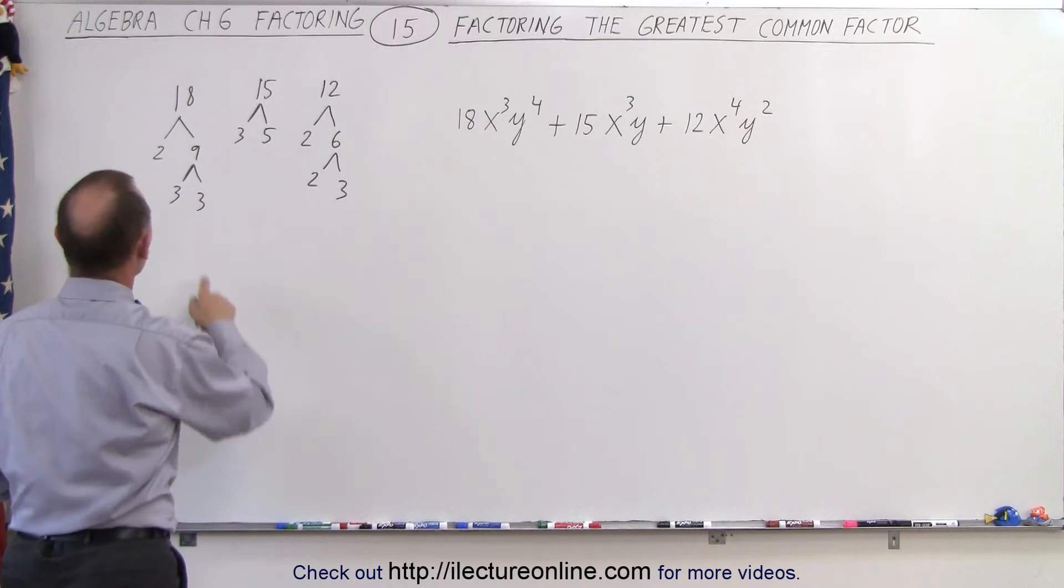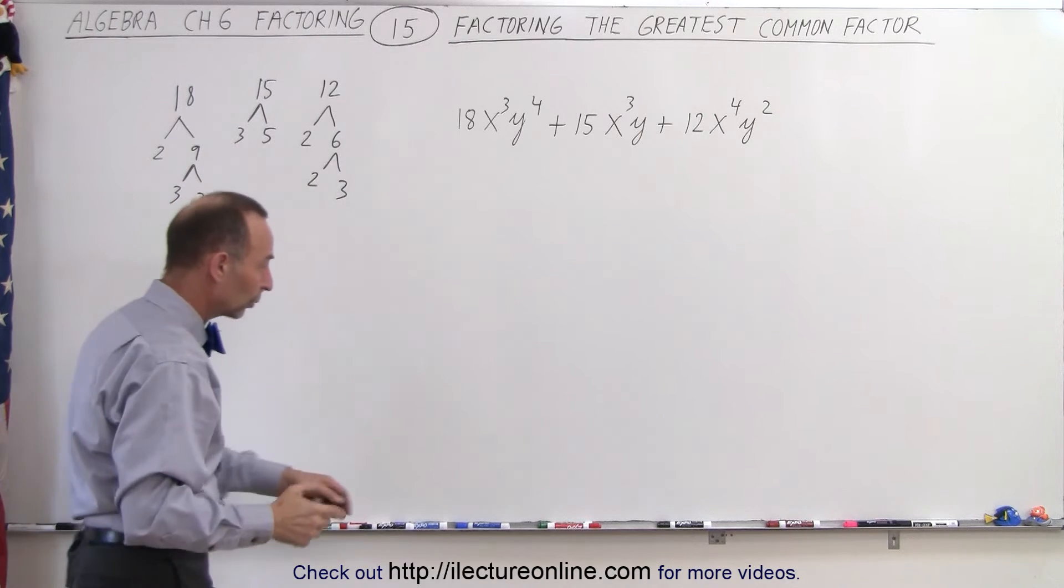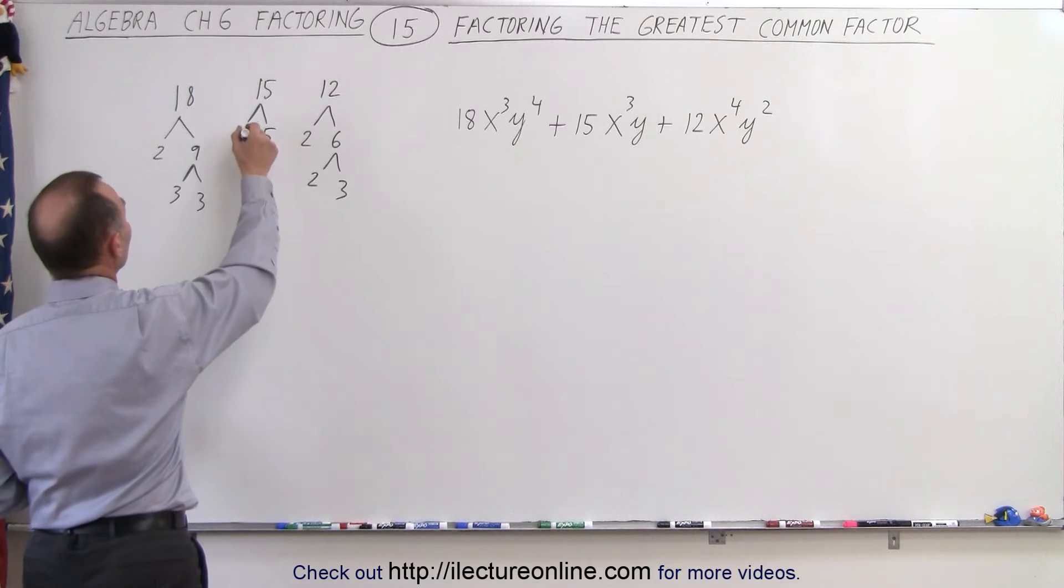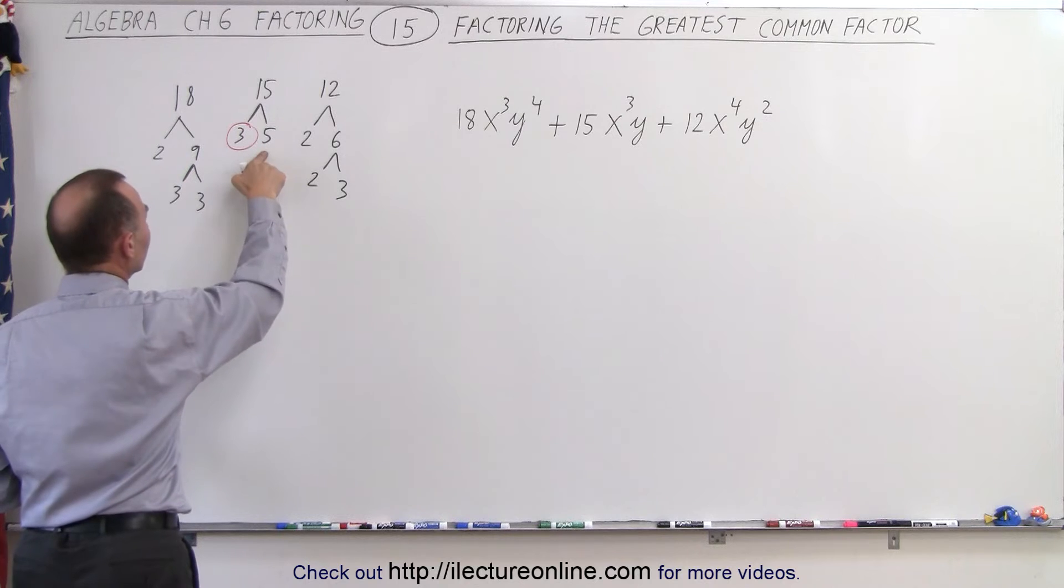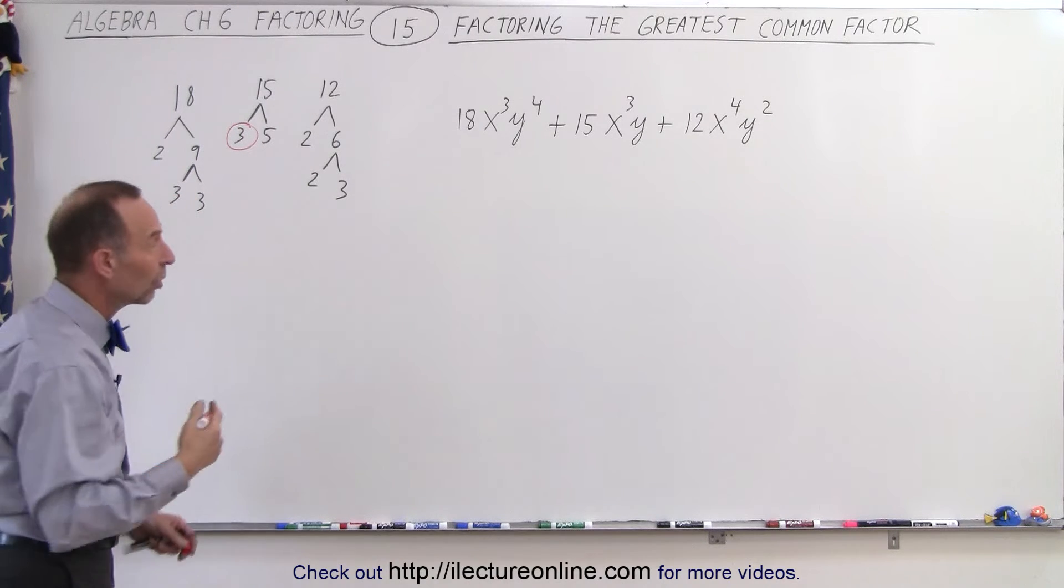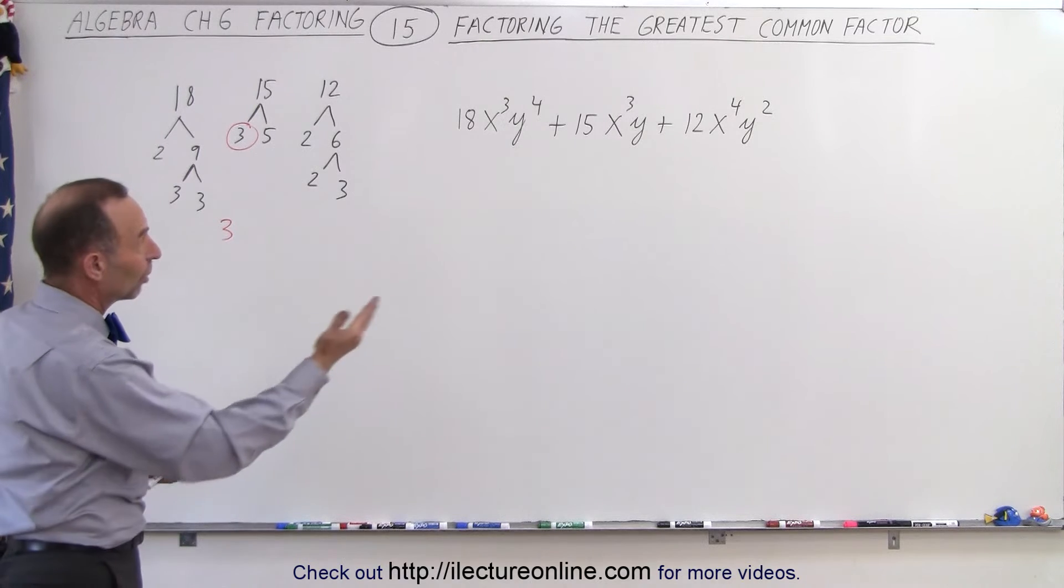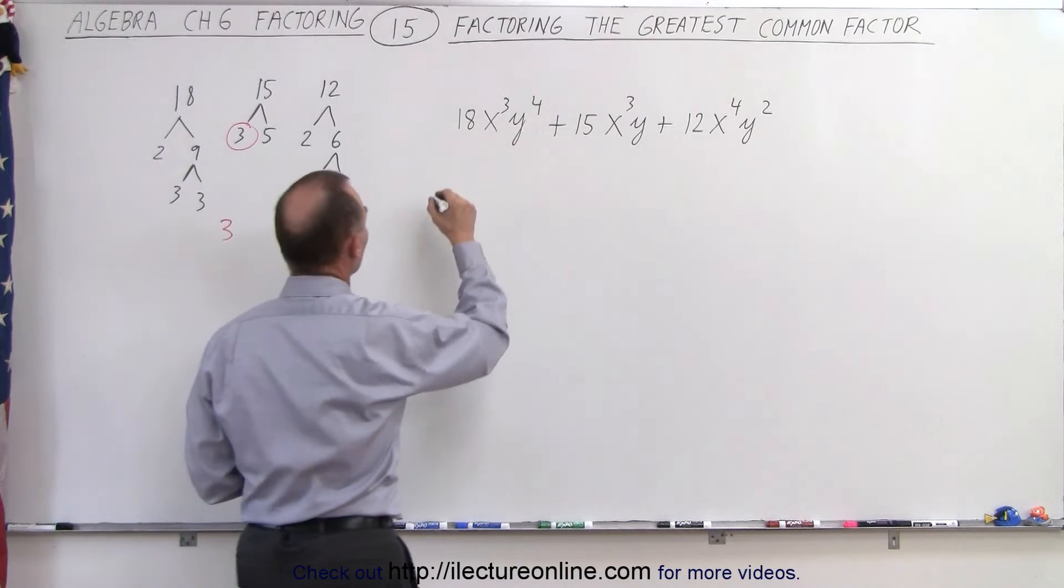How about the number 3? We have two of them here, we have one of them there, we have one of them there. So we're going to circle the 3 where it appears the least number times. The number 5 only appears there, which means the largest common factor in this case is going to be the number 3. That means the numerical common factor we can pull out will be the number 3.